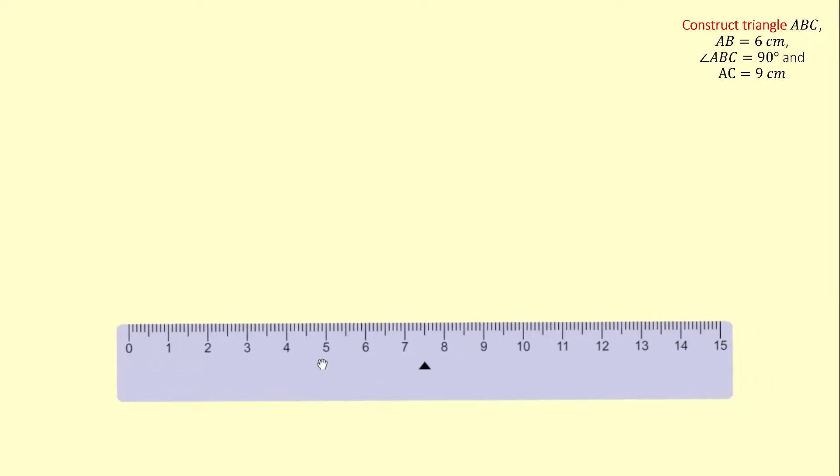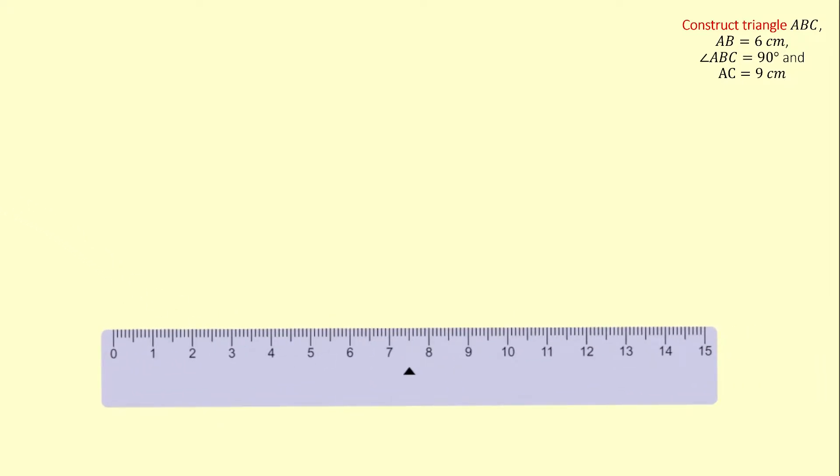Let's begin first by drawing line AB, which is 6 cm.